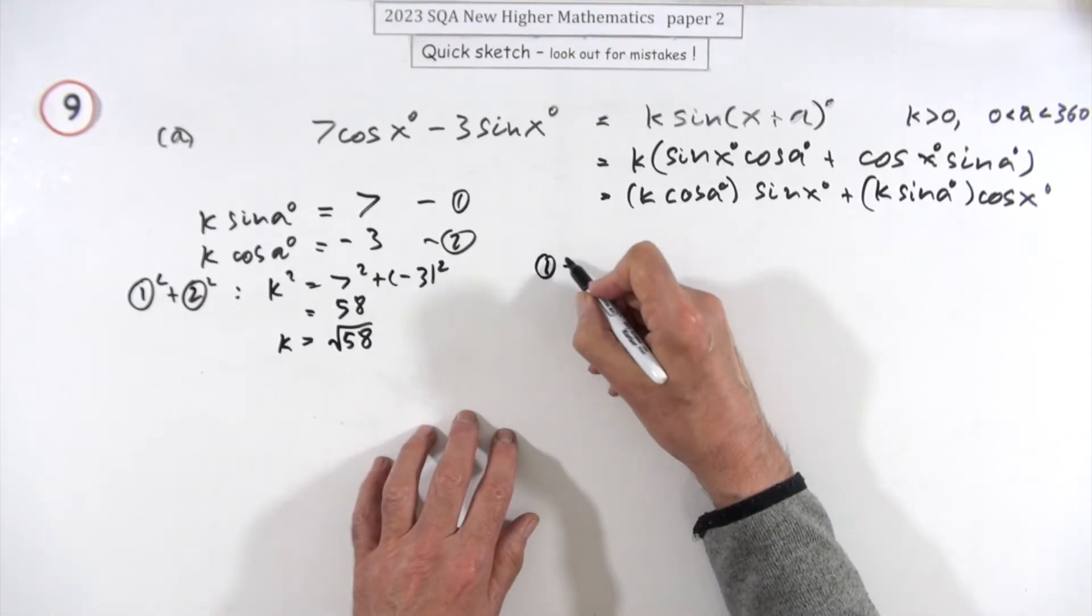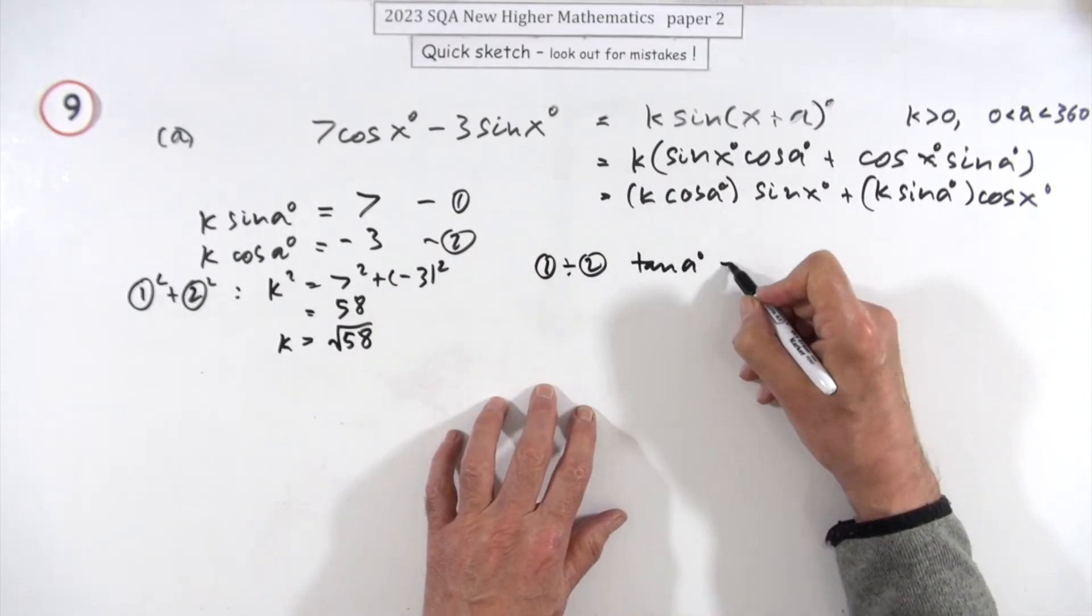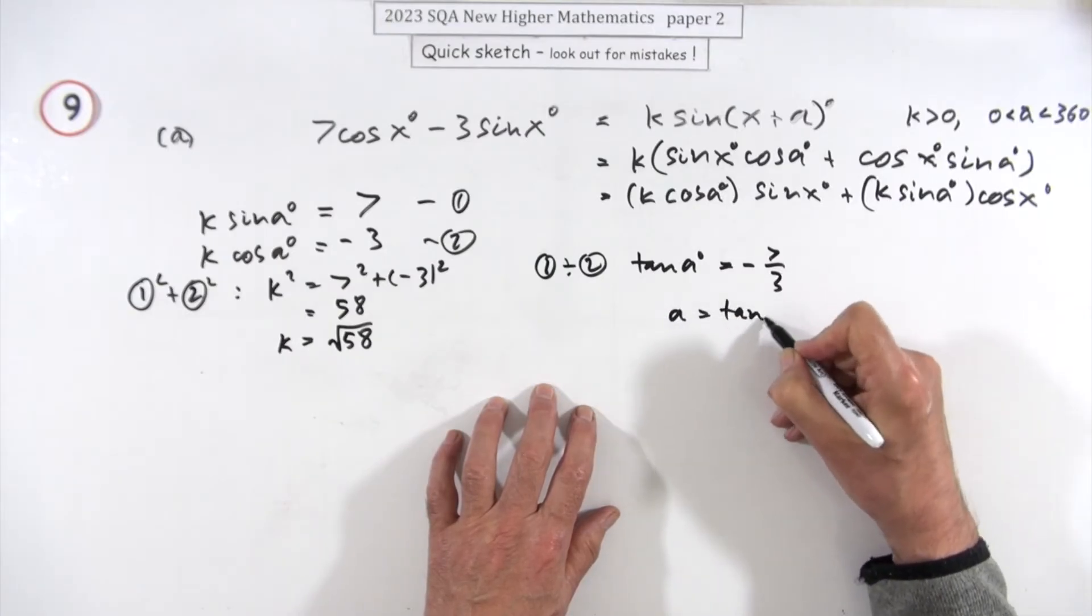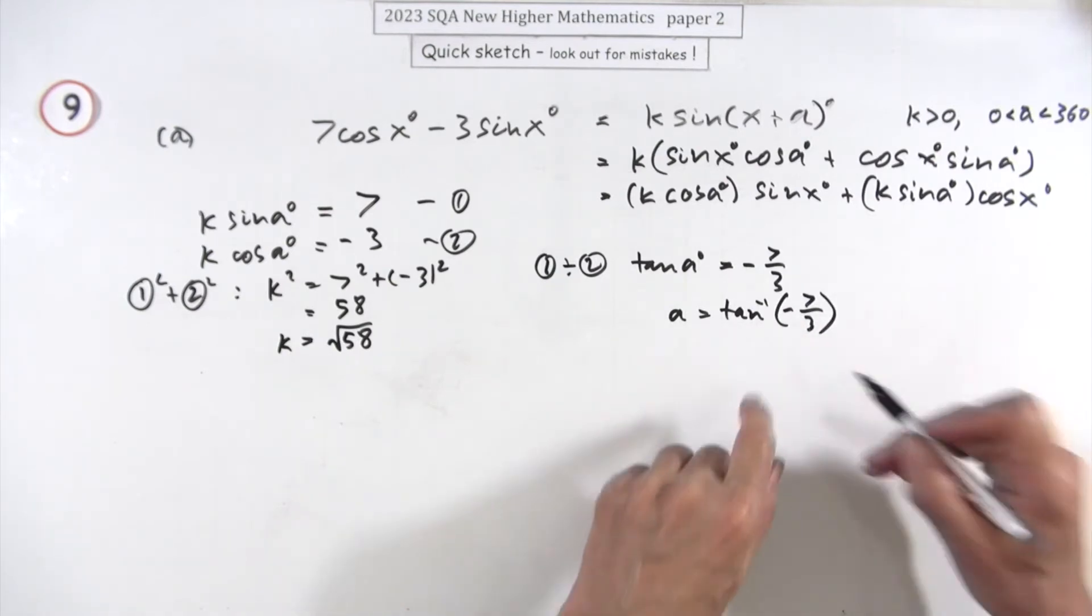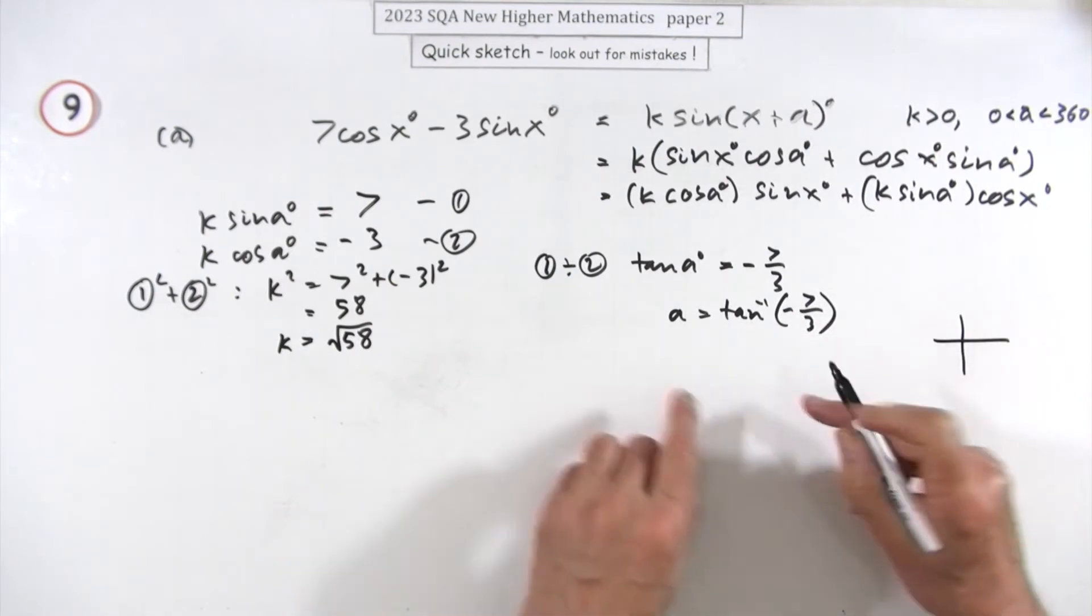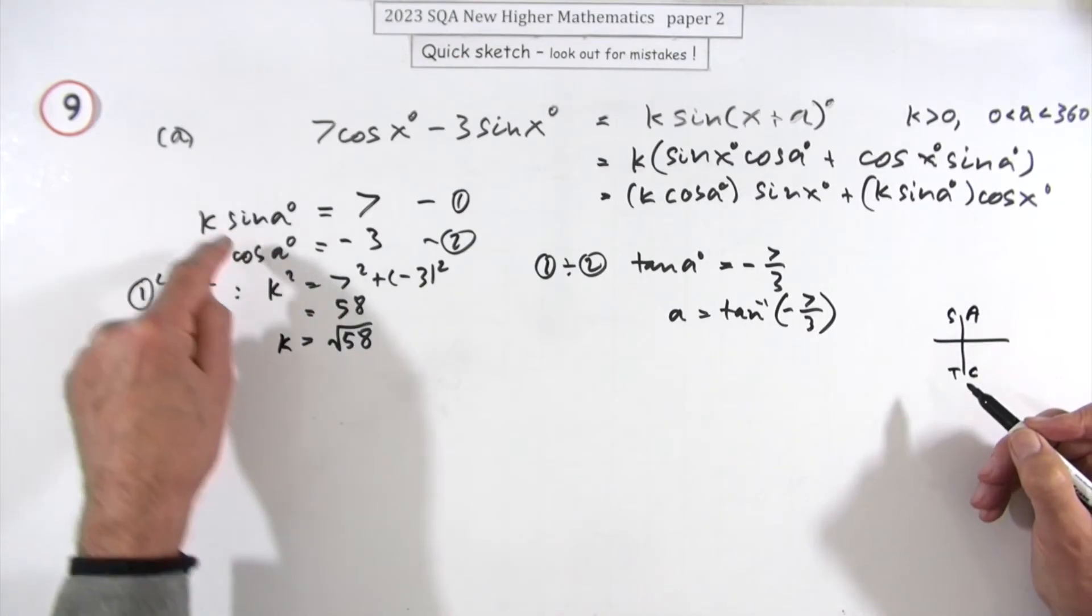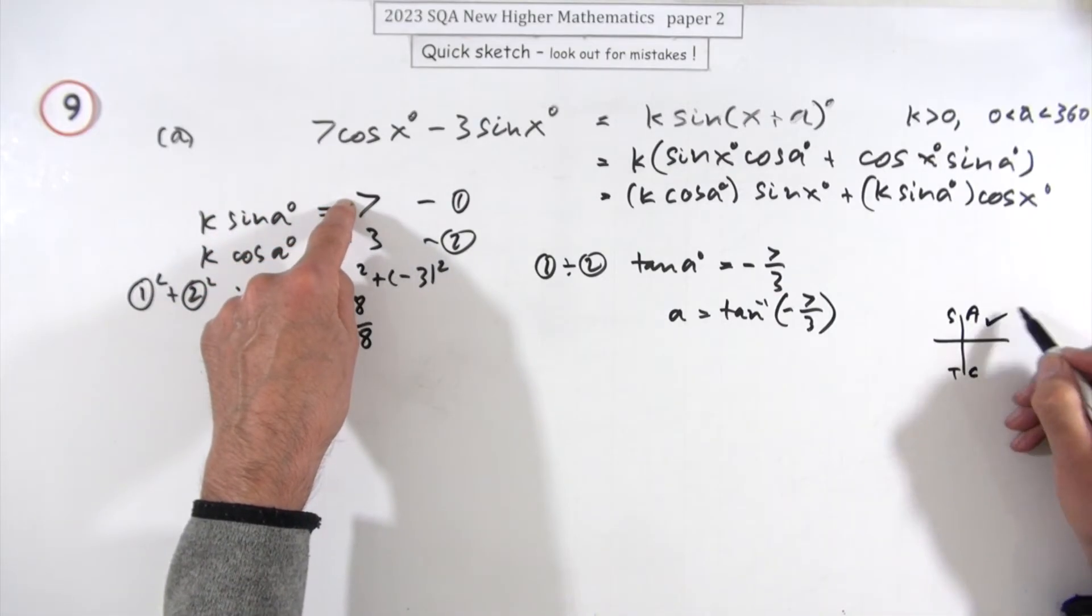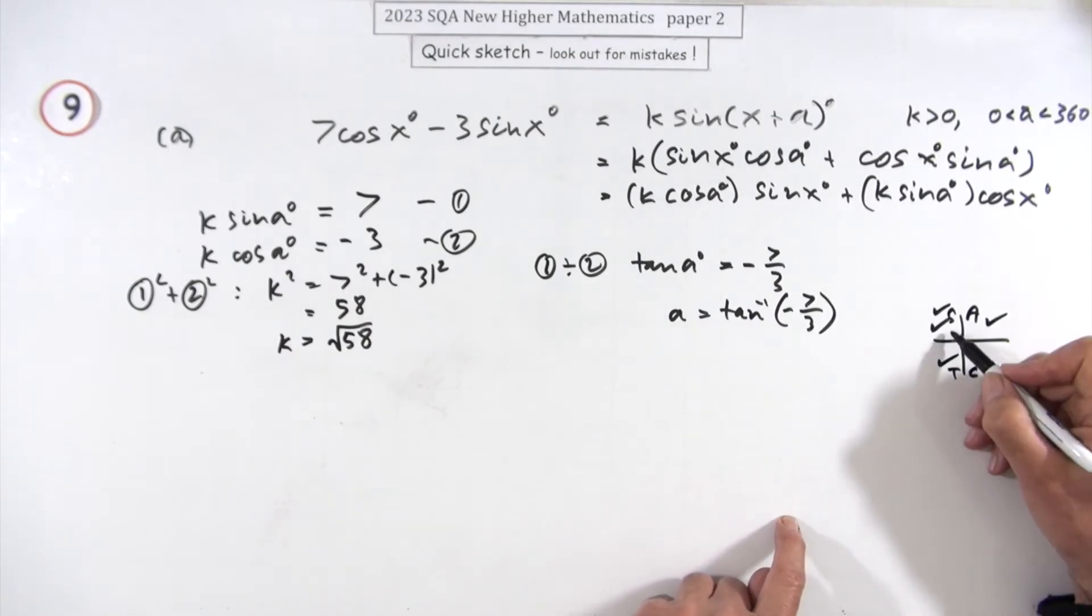Then dividing them, one divided by two, that'll knock out the k's, and sine over cos makes tan. The tan of α is going to be -7/3, so α is going to be the inverse tan of that. Now there may well be two answers to that, but there's only one answer to the pair of simultaneous equations because, remember k is positive, the sine has to be positive so that puts you either here or here, the cosine has to be negative so that either puts you there or there. That leaves you over in this part, so this is where the angle is going to go.